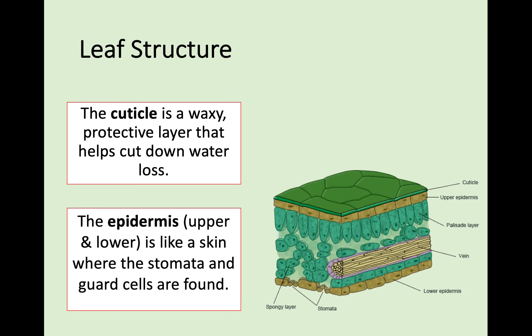On the very top of a leaf you have a waxy protective layer called a cuticle, which cuts down water loss and protects the cell. Below that are two layers both called the epidermis - just a term for a skin. The one on top is the upper epidermis and the one on the bottom is the lower epidermis. It's also quite protective and it's where we find structures called stomata and guard cells, which we'll come back to.